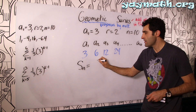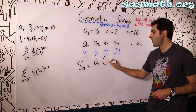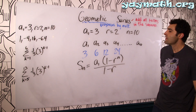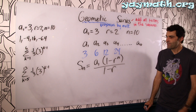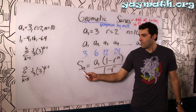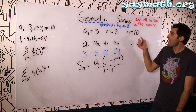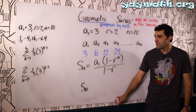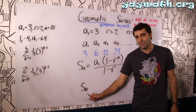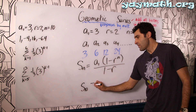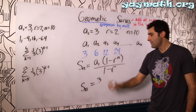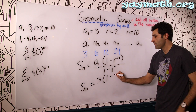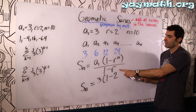Sn equals a1 times (1 minus r to the n), all over (1 minus r). This is the formula offered in the books. This is the sum of the first n terms. In this case n is 10, so this would be S10, the sum of the first 10 terms. a1 is the first term: 3. Then 1 minus the rate of change: 2, raised to n which is 10. All over 1 minus 2.